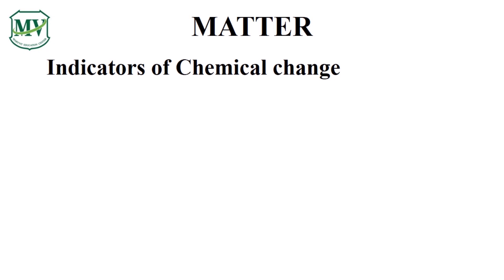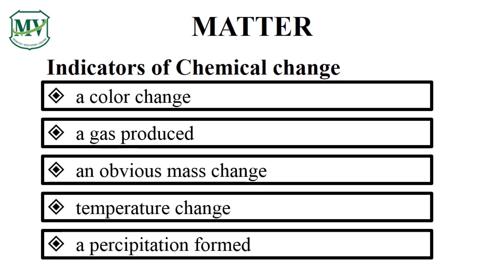How do we know that a chemical change occurred? Here are some indicators of chemical change: a change in color, production of gas, change in mass, temperature change, and lastly, precipitation. All of these are some indicators of chemical change.